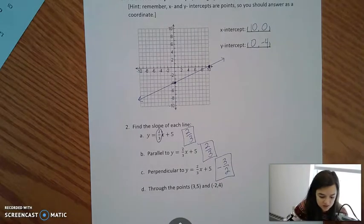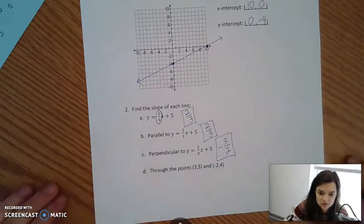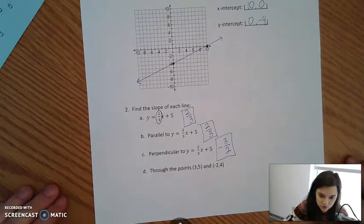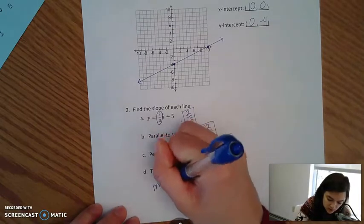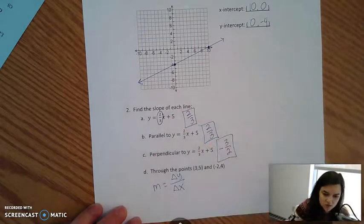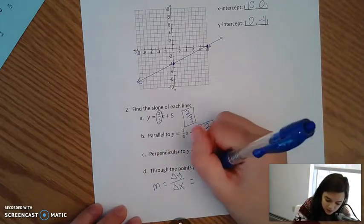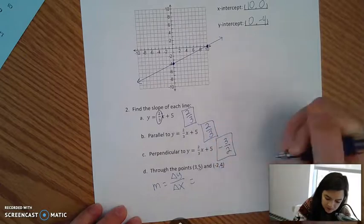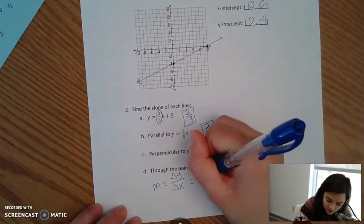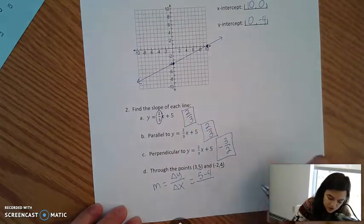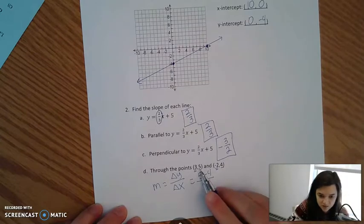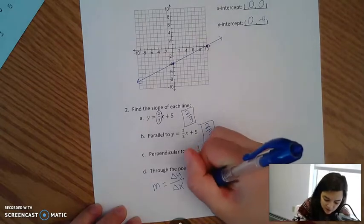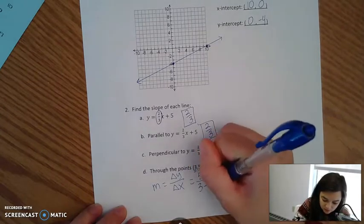Last one is asking you to find slope through a couple of points. So we have the point 3, 5, and the point negative 2, 4. So to find slope, remember that slope is change in y over change in x. It's rise over run. So the change in our y coordinates, my y coordinates are 5 and 4, so change in y would be 5 minus 4 over change in x. My x coordinates are 3 and negative 2, and since I started with 5, which was in the first point, I've got to start with 3 so that it matches. So I have to do 3 minus negative 2.